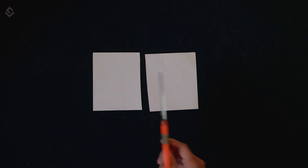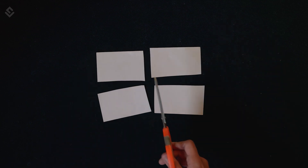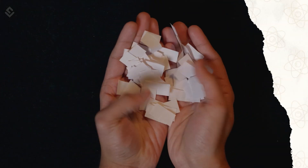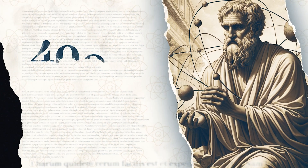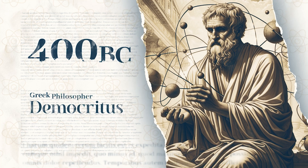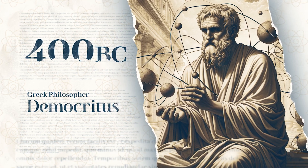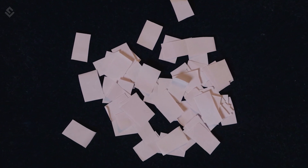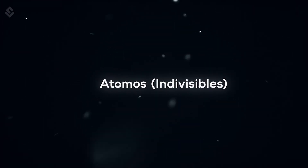If you take a piece of paper, cut it in half, and then cut it to smaller and smaller pieces, what do you get? This is a similar kind of thought experiment which Greek philosopher Democritus pondered in around 400 BC. He concluded that if we keep cutting, we'll find that everything is made up of tiny eternal particles. He called them atomos, meaning indivisibles. But it wasn't until the 19th century that Democritus was proven right.